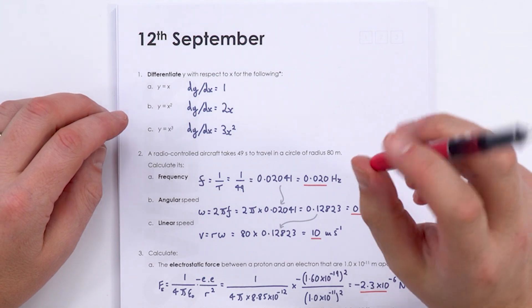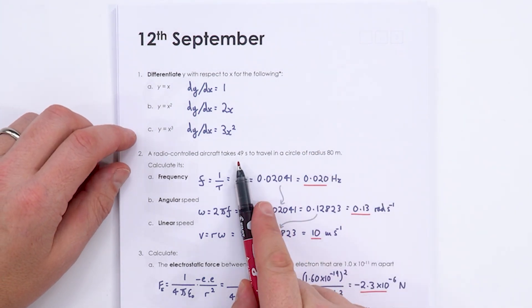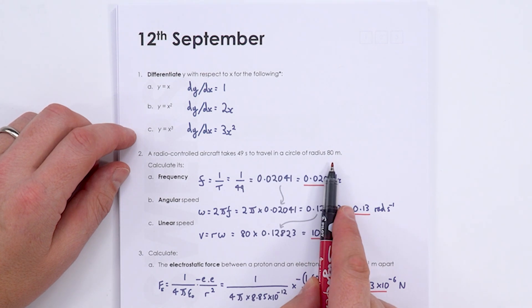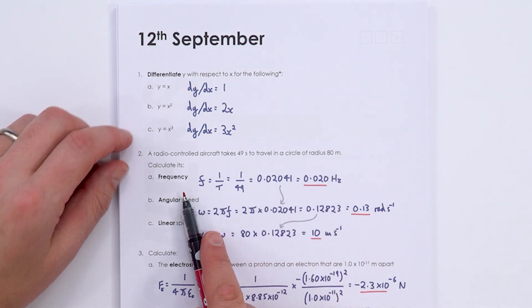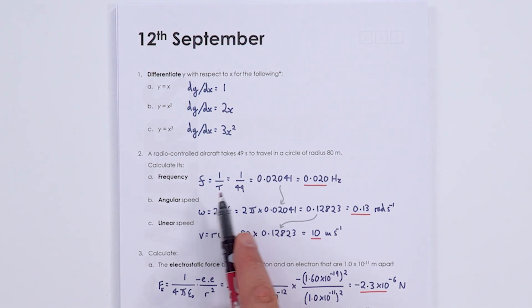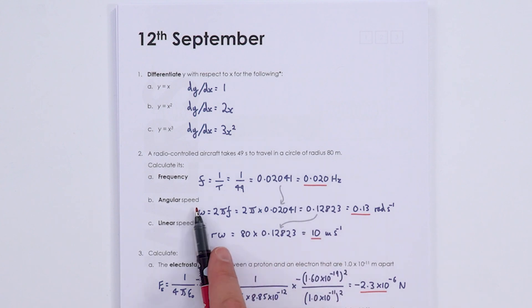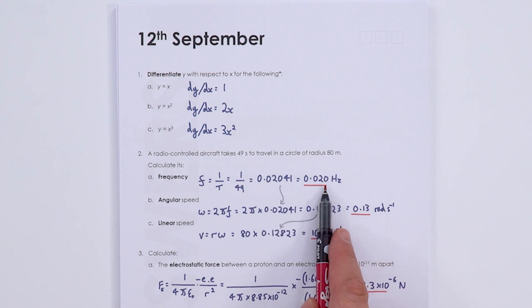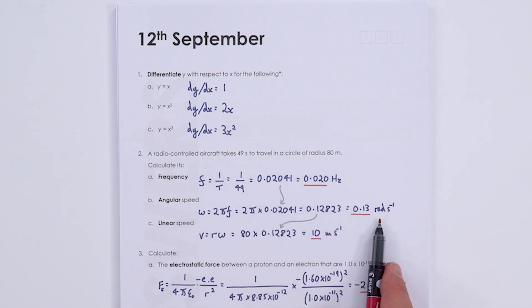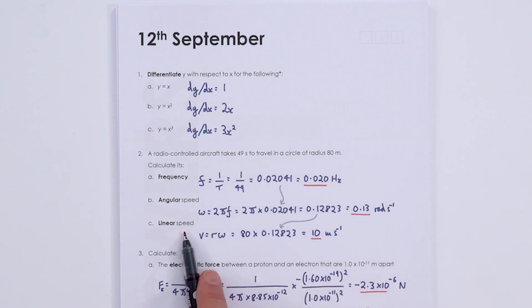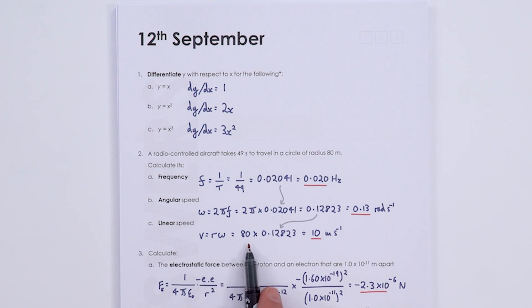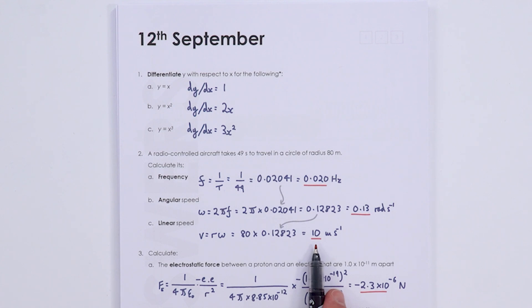An aircraft takes 49 seconds to travel in a circle of radius 80 m. Frequency = 1/49 = 0.020 Hz. Angular speed ω = 2πf = 0.13 rad/s. Linear (tangential) speed v = rω = 80 × 0.13 = 10 m/s.